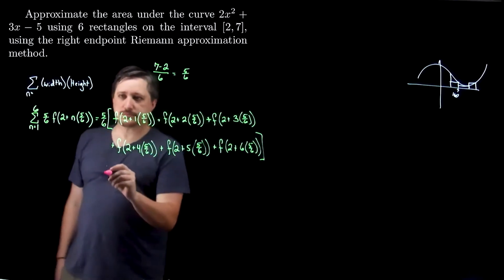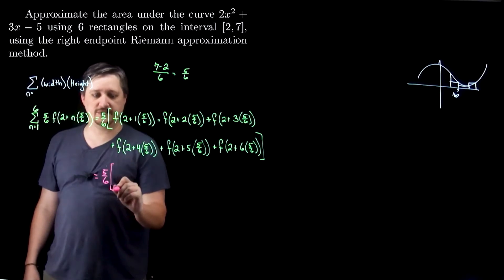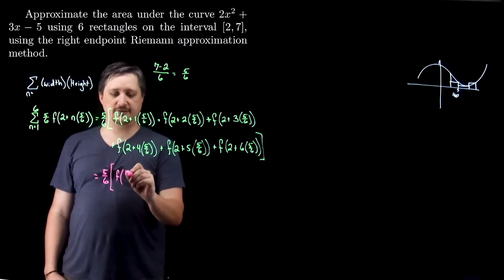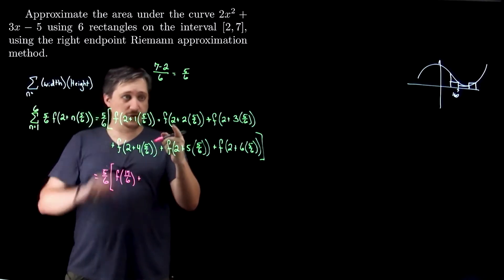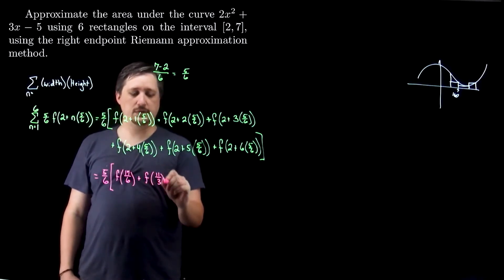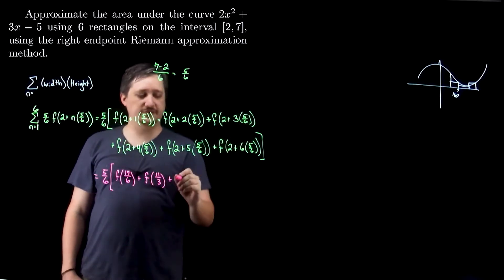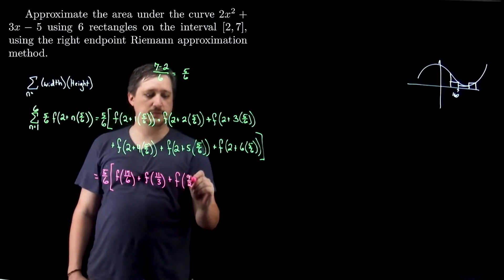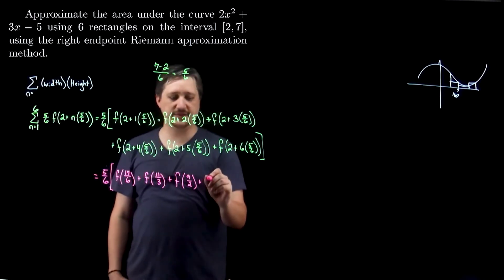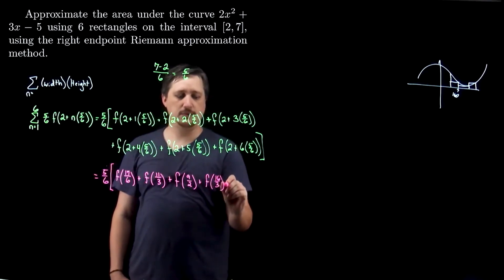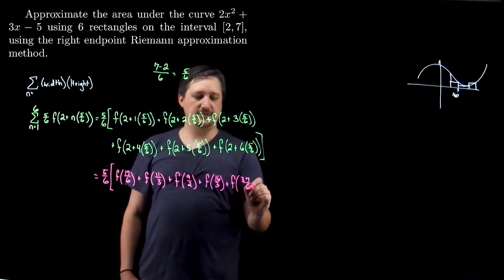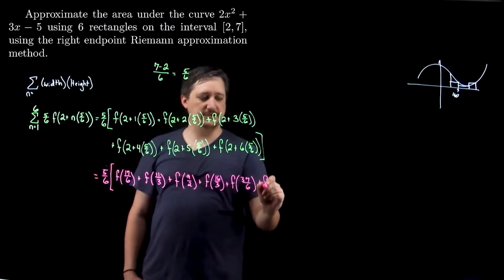Now I'll clean this up. So this is 5 sixths times: f of 17 sixths — since 2 plus 5/6 is 17/6 — then f of 11 thirds — since 2 plus 10/6 is 5/3 giving 11/3 — then f of 9 halves — five halves plus two — then f of 16 thirds, then f of 37 sixths — 2 times 25 gives 37 sixths — and that last one cancels out nicely, so this is f of 7.